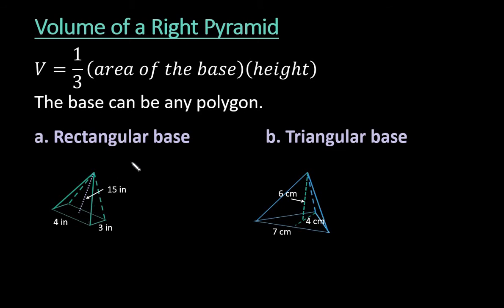So the volume of a right pyramid is found by doing one-third times the area of the base times the height, and the base can be any polygon.